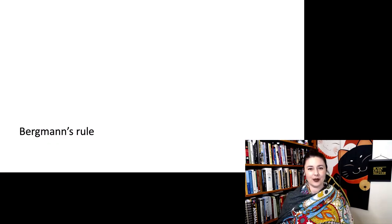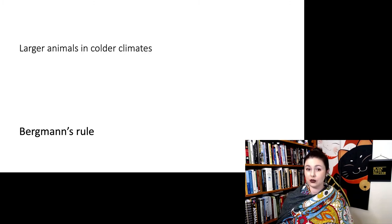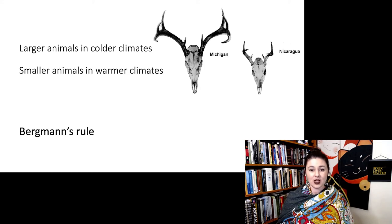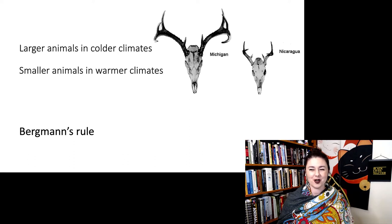The first one is Bergman's rule. We tend to find larger animals in colder climates, but smaller animals in warmer climates. Here we can see this demonstrated with these deer. The Michigan deer has a much larger body size than the similar deer that lives in Nicaragua, which is of course a lot warmer than Michigan.